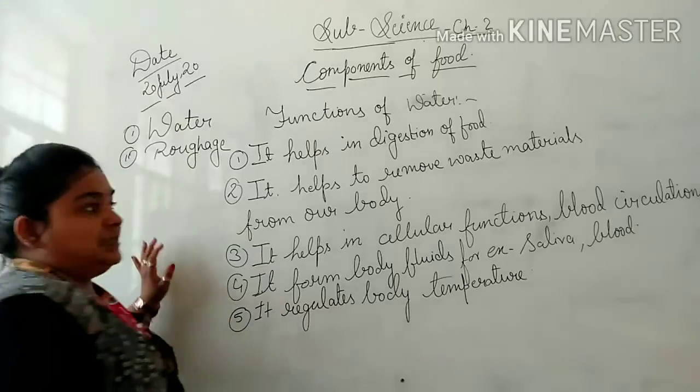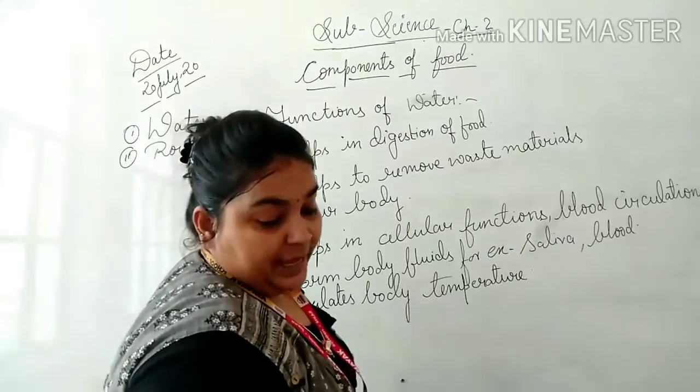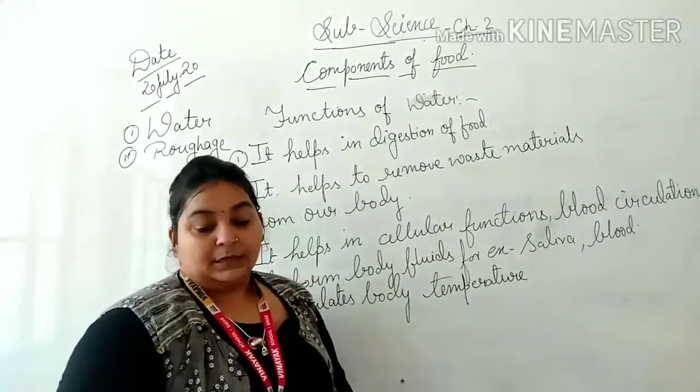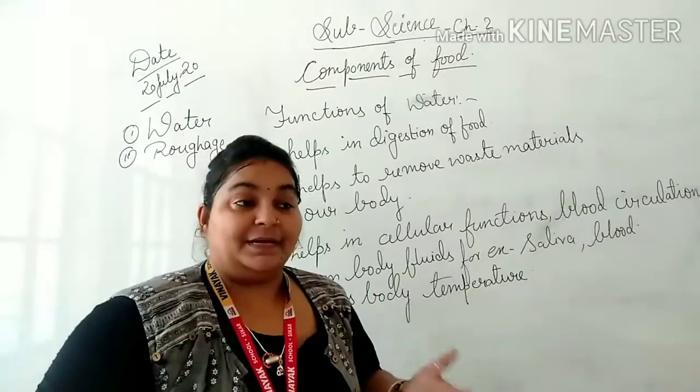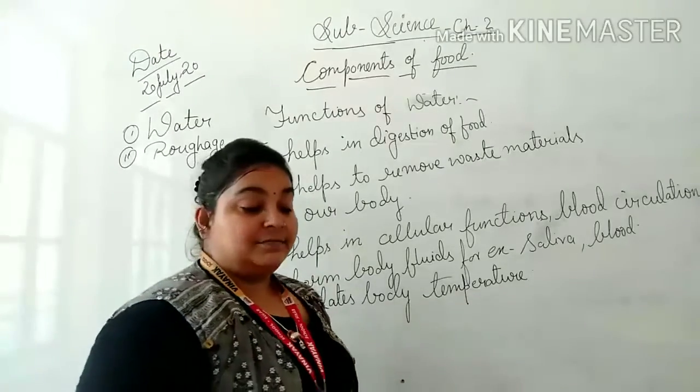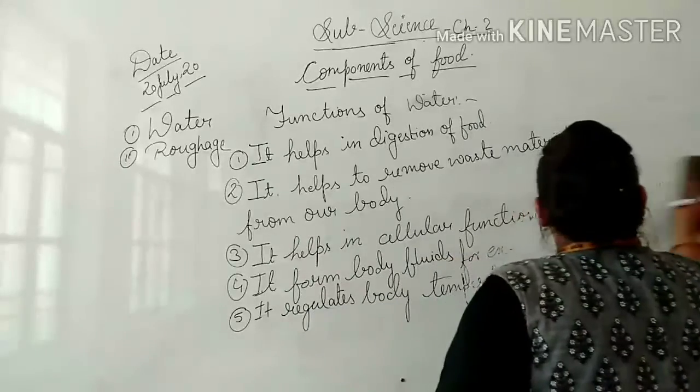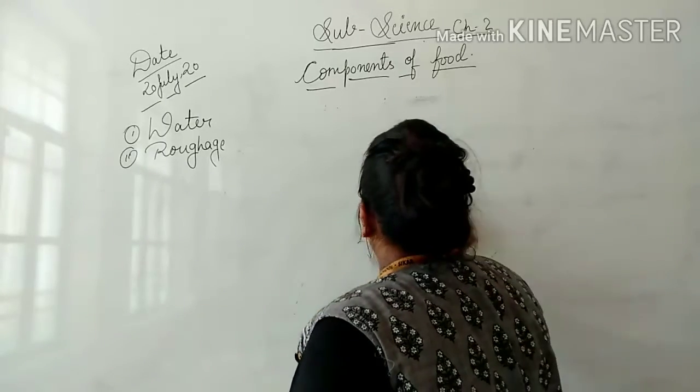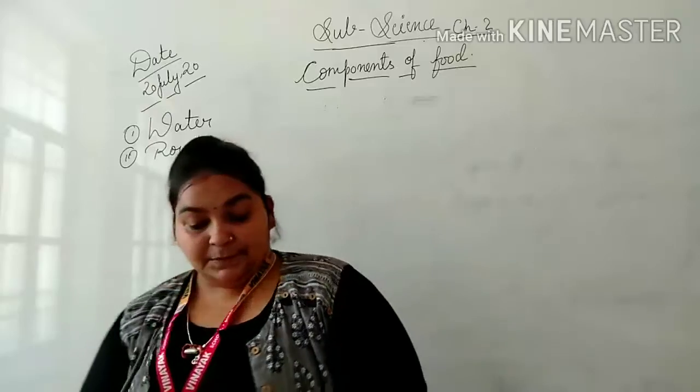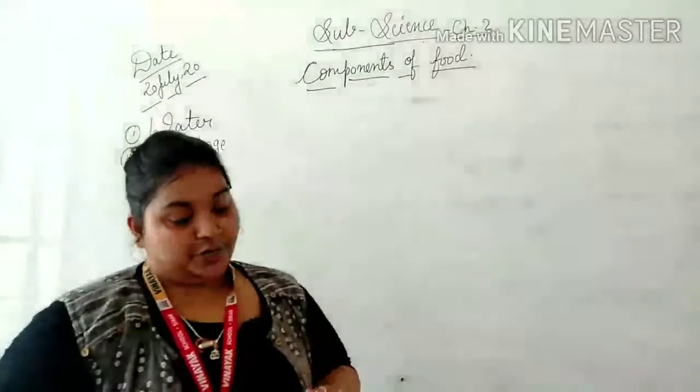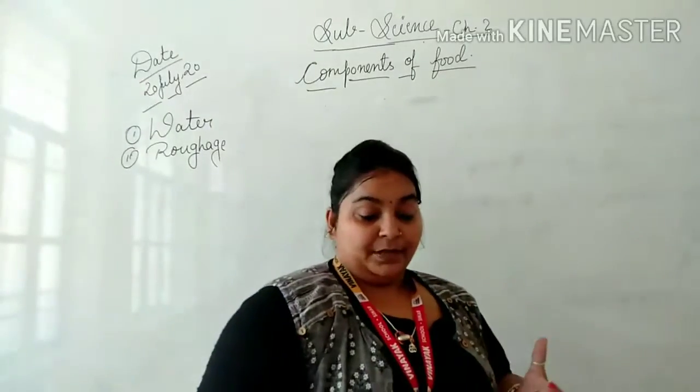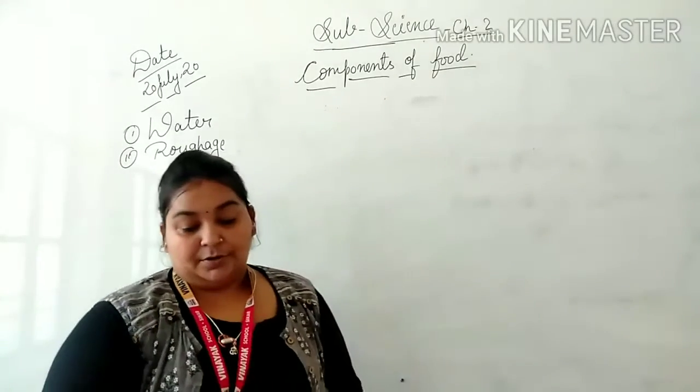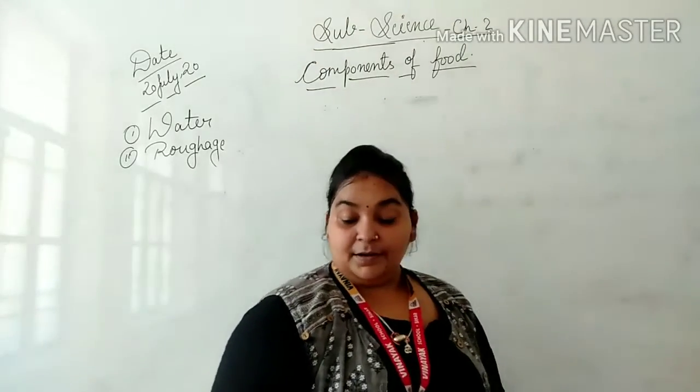Now, the next term is roughage. Roughage is that type of portion of our food that is derived from plant food, which completely cannot be broken down by our human digestive system. Roughage is necessary for proper digestion of food.